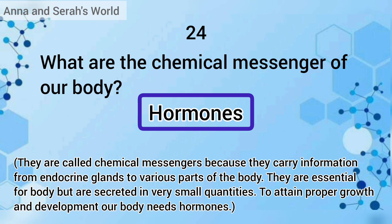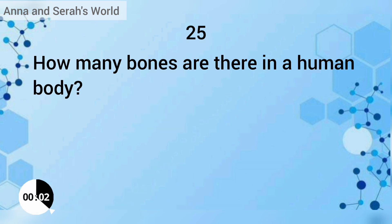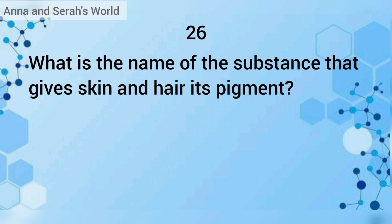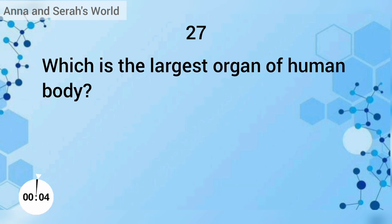How many bones are there in a human body? The answer is 206. What is the name of the substance that gives skin and hair its pigment? The answer is melanin.